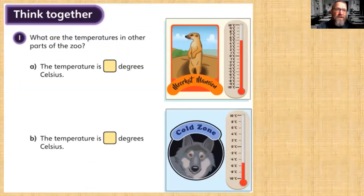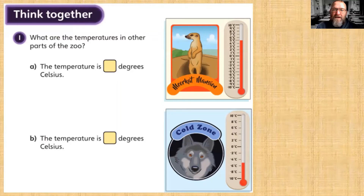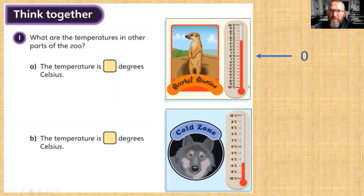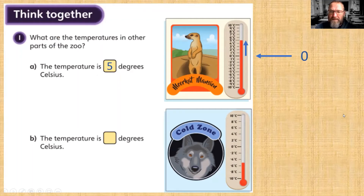Let's have a look at the think-together question: what are the temperatures in other parts of the zoo? Look at the Meerkat Mansion and the Cold Zone. In the Meerkat Mansion, the most important thing to do with negative numbers is find the zero point. We don't start from the bottom of the thermometer — we start from zero. This is a positive temperature, so we count up: one, two, three, four, five. The temperature is exactly five degrees Celsius.